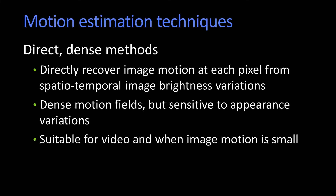Direct and dense methods — what they do is they recover motion at every pixel in the image, and that gives you a dense flow field. It's based upon what we call the spatial temporal brightness variations — how the appearance is moving and changing. It can be sensitive to appearance changes, but as long as you're getting video-like sequences where you have frames sampled regularly and frequently, it works pretty well.